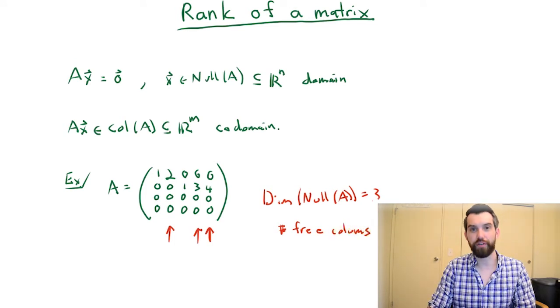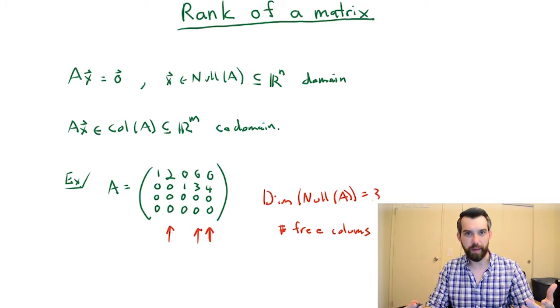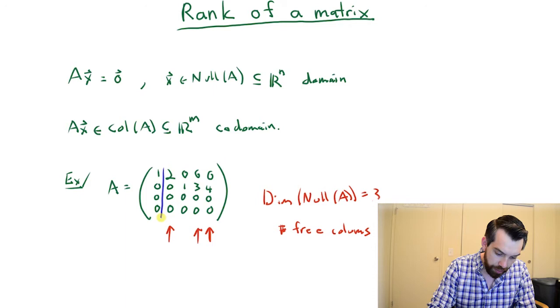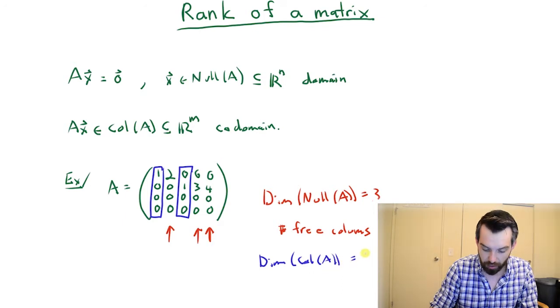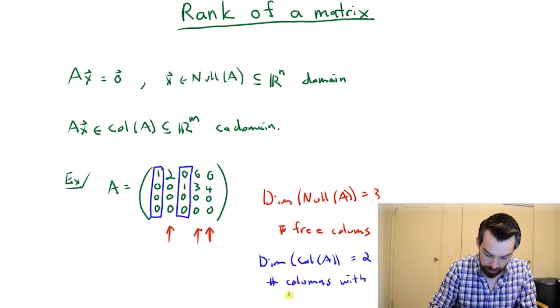That's all very lovely, but let's go a little bit further. Now I want to talk about the column space. You might recall from the previous video that the column space was generated by the columns that do have leading ones in them. So the dimension of the column space of A was in this particular case two, but generally it's the number of columns with leading ones.